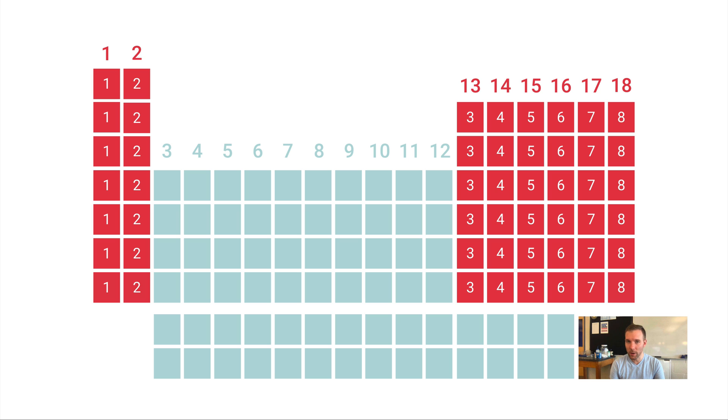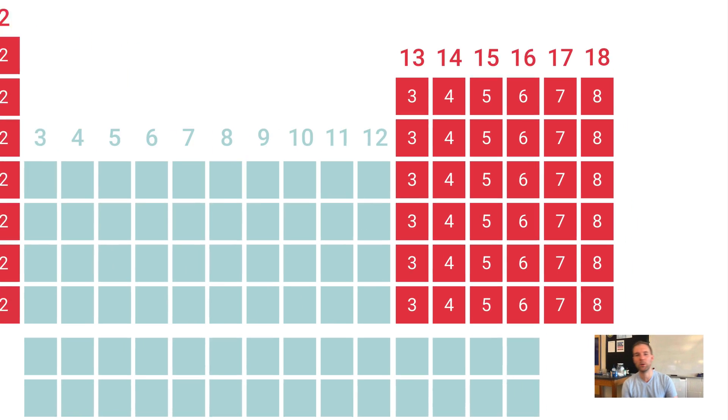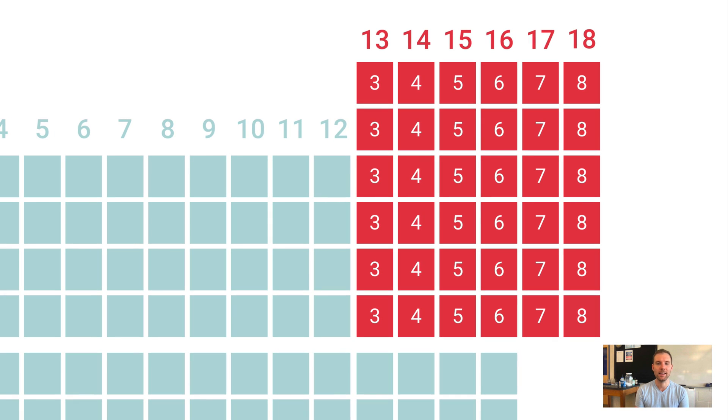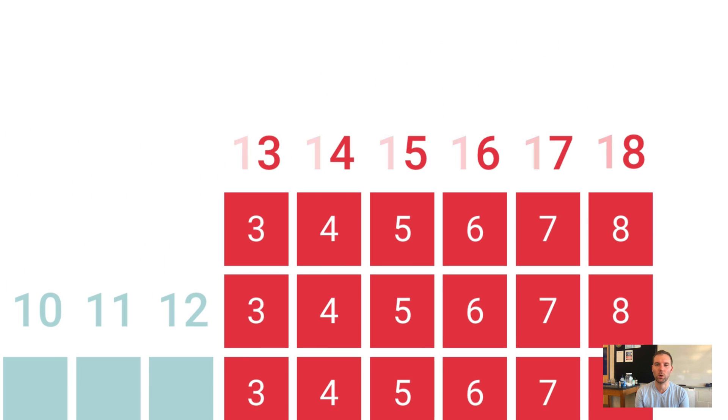All the group two elements have two valence electrons. If you slide over to group 13, we're skipping over groups 3 through 12 because the d block elements don't have a great pattern there. In group 13, all elements have three valence electrons; in 14 they all have four. If you ignore the one at the beginning of the group number, it'll tell you how many valence electrons are in all the elements within that group.